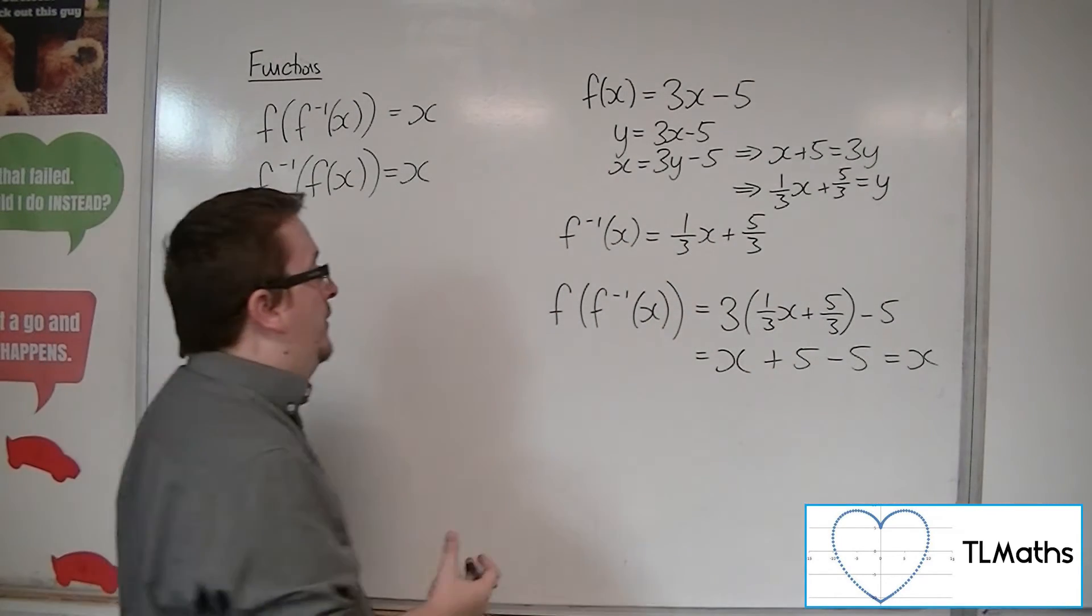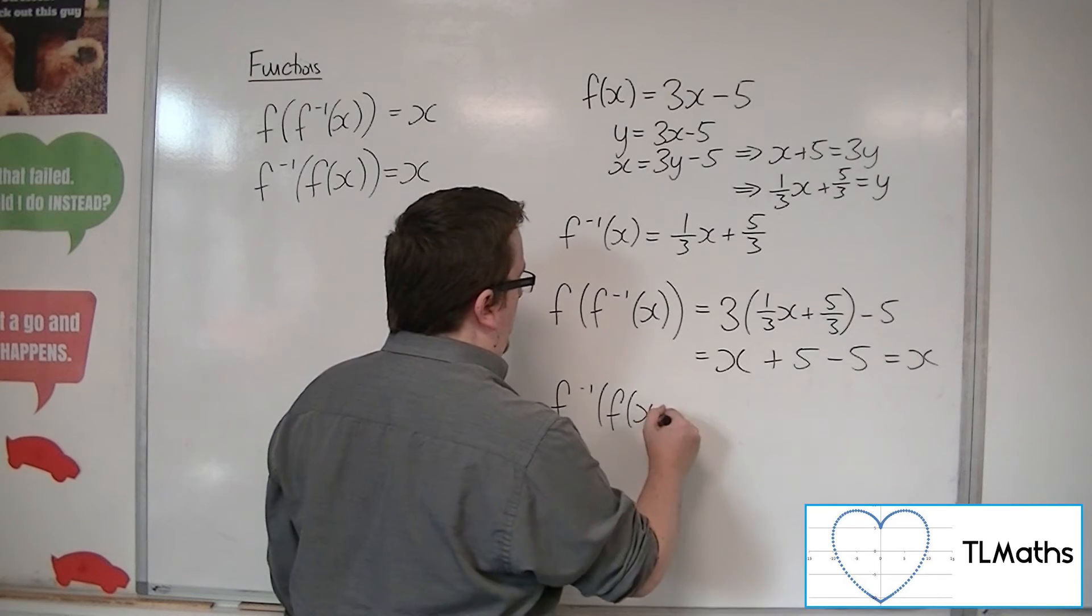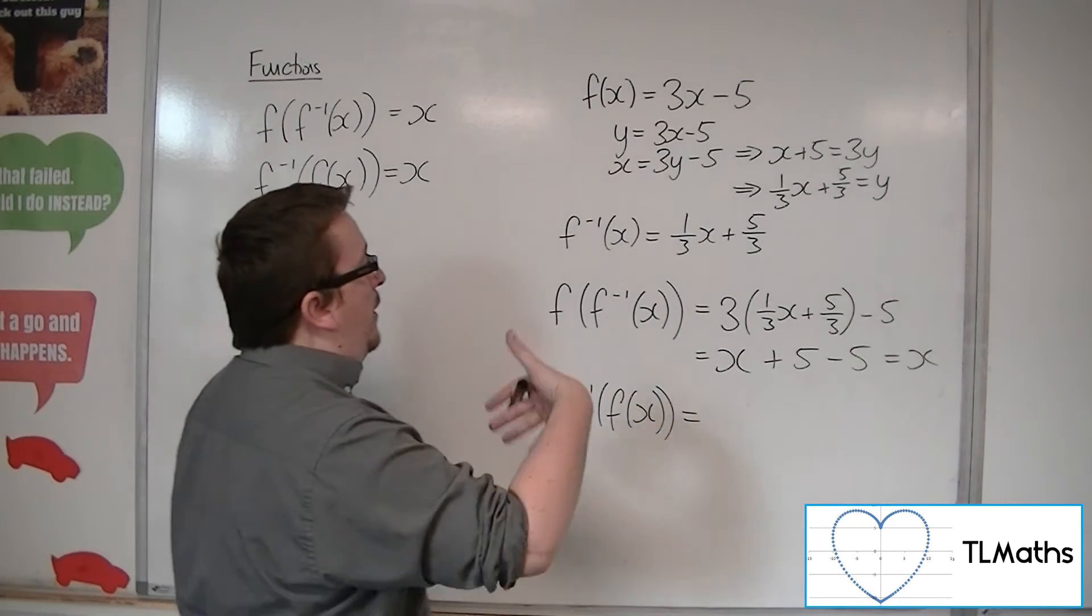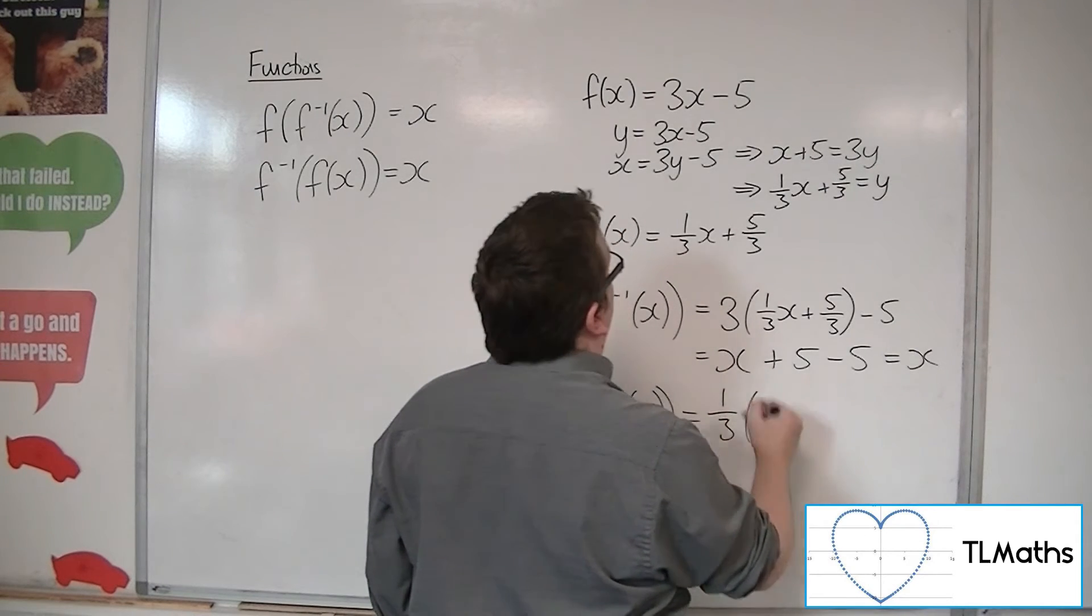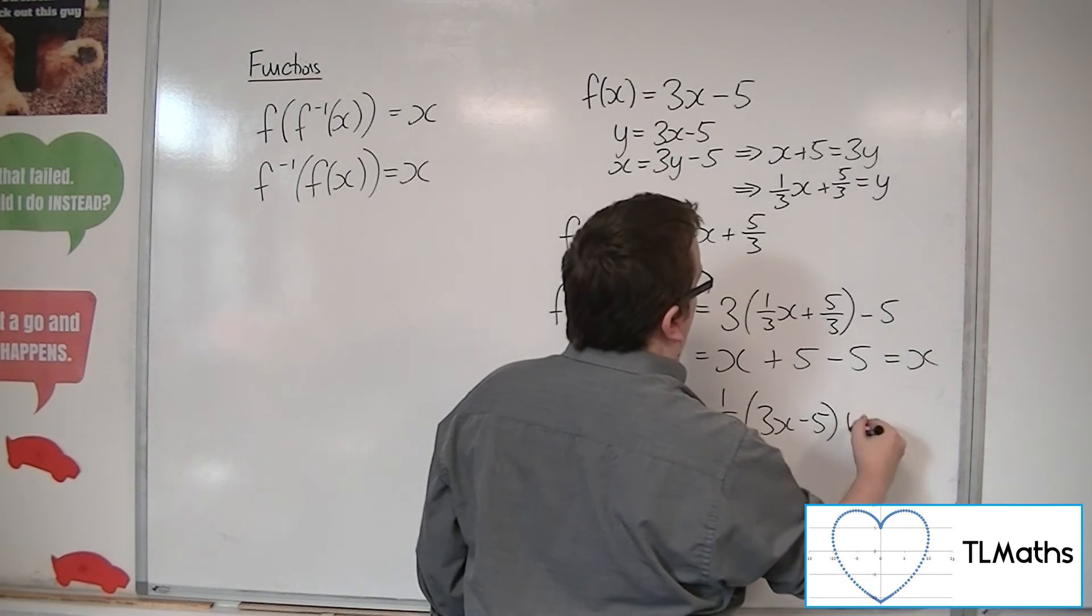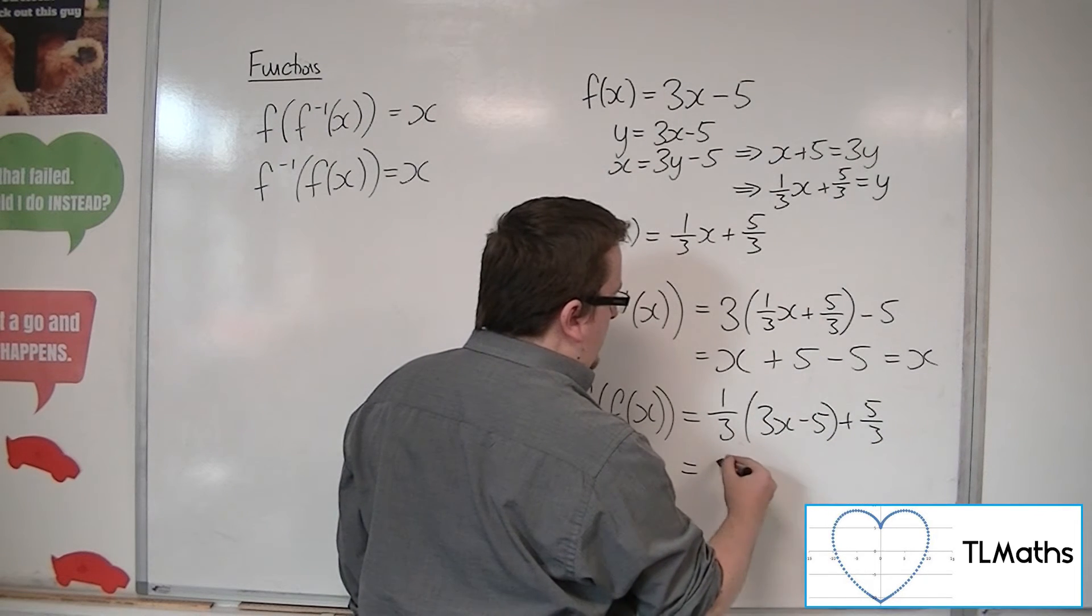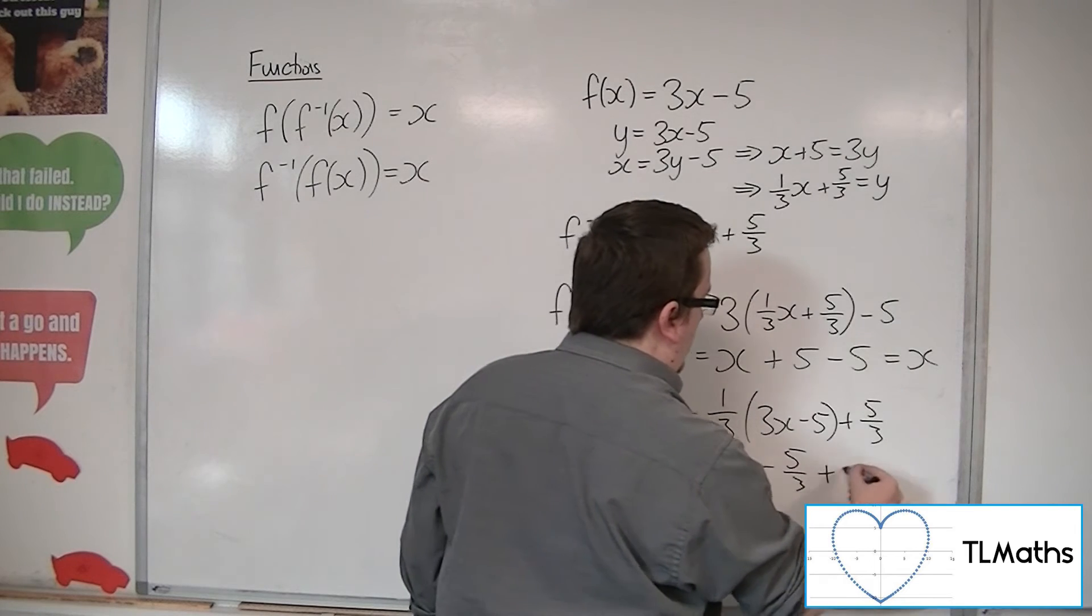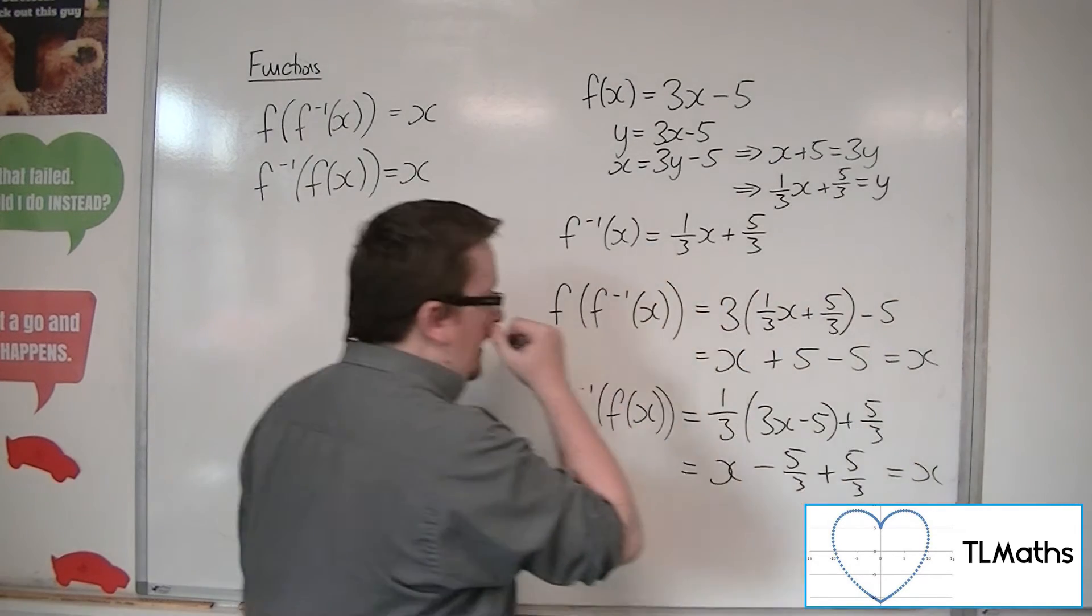Likewise, f minus 1 of f of x, then f of x is going into the inverse function this time. So we have a third of 3x minus 5 plus 5 thirds. A third times 3x is x, a third times minus 5 is minus 5 thirds, plus 5 thirds. The 5 thirds cancel, and you get left with x.